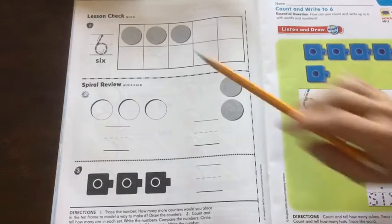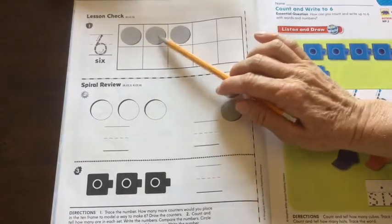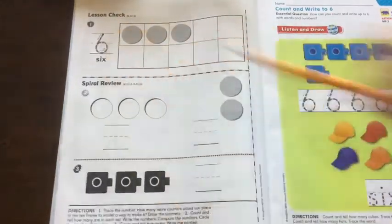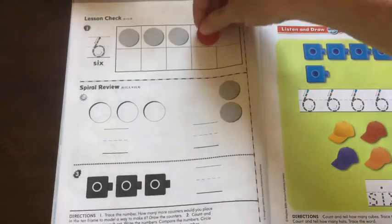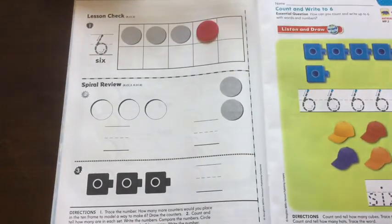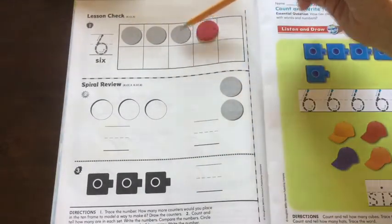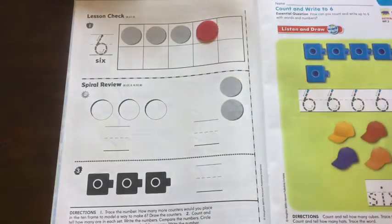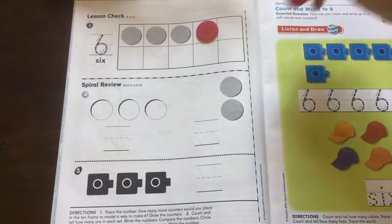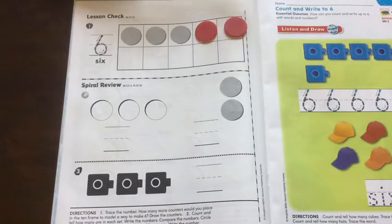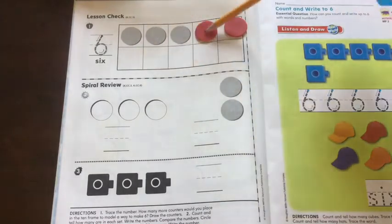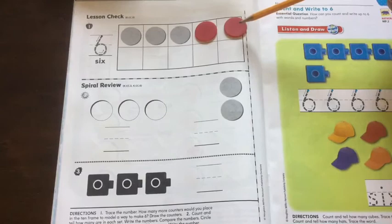1, 2, 3. But we need 6. So if I put one more on, how many is that? 1, 2, 3, 4. It's not 6 yet, so I'm going to put another one on. Now how many? 1, 2, 3, 4, 5. Is that 6? Not yet.